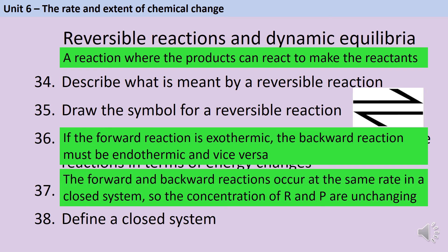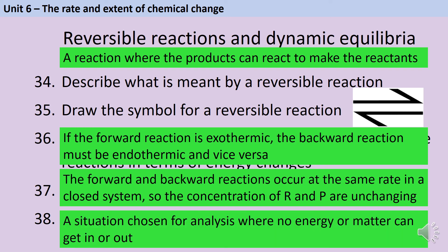Equilibrium happens when the forward and backward reactions are occurring at the same rate in a closed system, and this means that the concentration of the reactants and products will be unchanging. A closed system is just where we have a reaction vessel that's sealed and no energy and no matter, so no atoms, can get in or out.